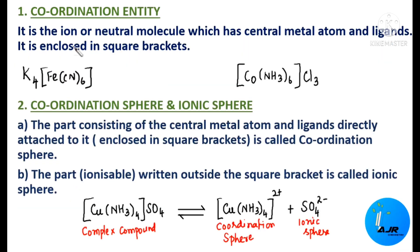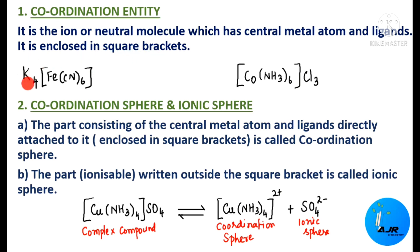Coordination entity is nothing but an ion or neutral molecule which has a central metal atom and ligands, and it is enclosed in square brackets. The coordination entity may be an ion or a neutral molecule, having a central metal atom with ligands attached to it, and that coordination entity will be enclosed in square brackets.